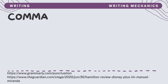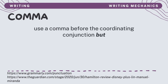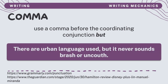A rule that is often mistaken is the use of a comma before the coordinating conjunction 'but.' You only use a comma before 'but' if it is joining two independent clauses. In this example: 'There are urban language used, but it never sounds brash or uncouth.' The comma here is used before 'but' as the sentence has two independent clauses.